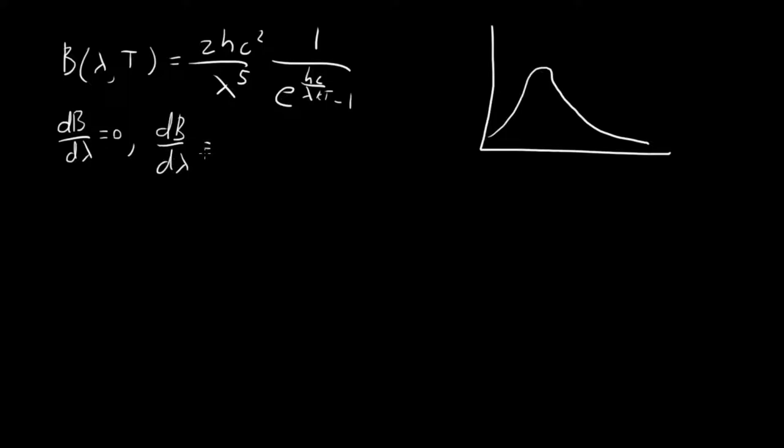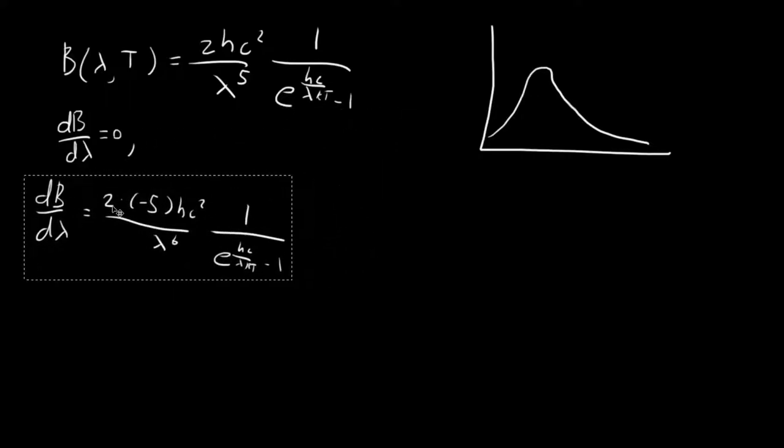I'll do a product rule here. So this first term is going to pull out a minus five. We'll get two times minus five hc squared over lambda to the sixth, one over e to the hc over lambda kt minus one. Let me move this because it's in a bad spot.